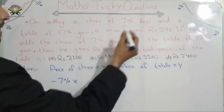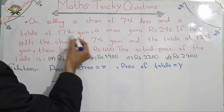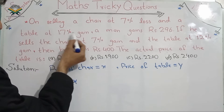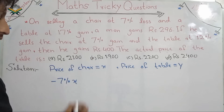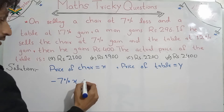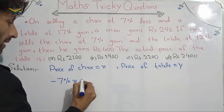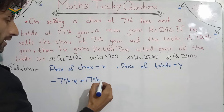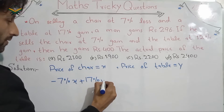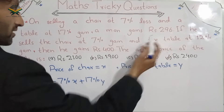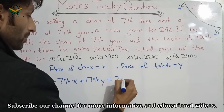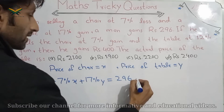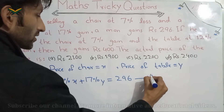So for Equation 1: selling the chair at 7% loss gives minus 7% on x, and the table at 17% gain gives plus 17% on y. The total profit is Rs. 296. This is Equation 1.